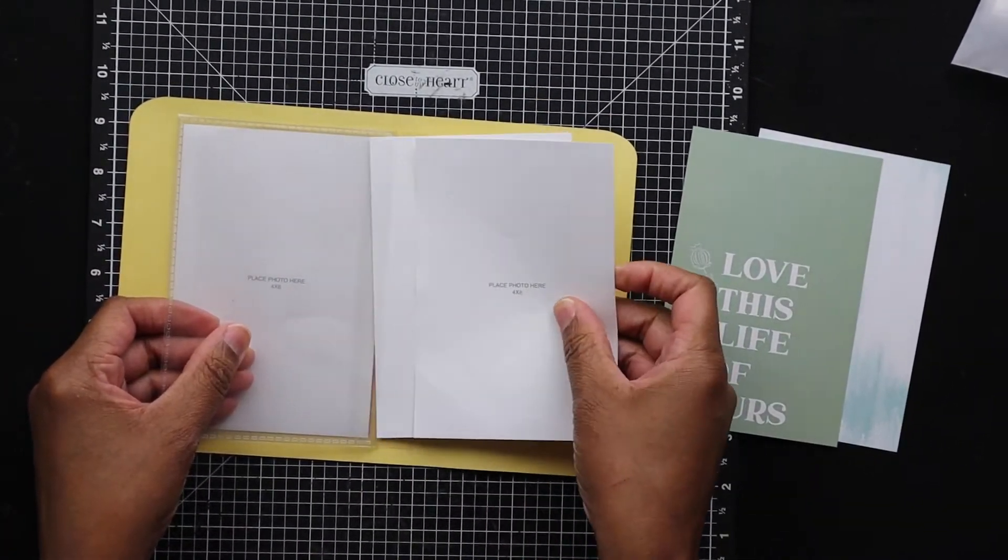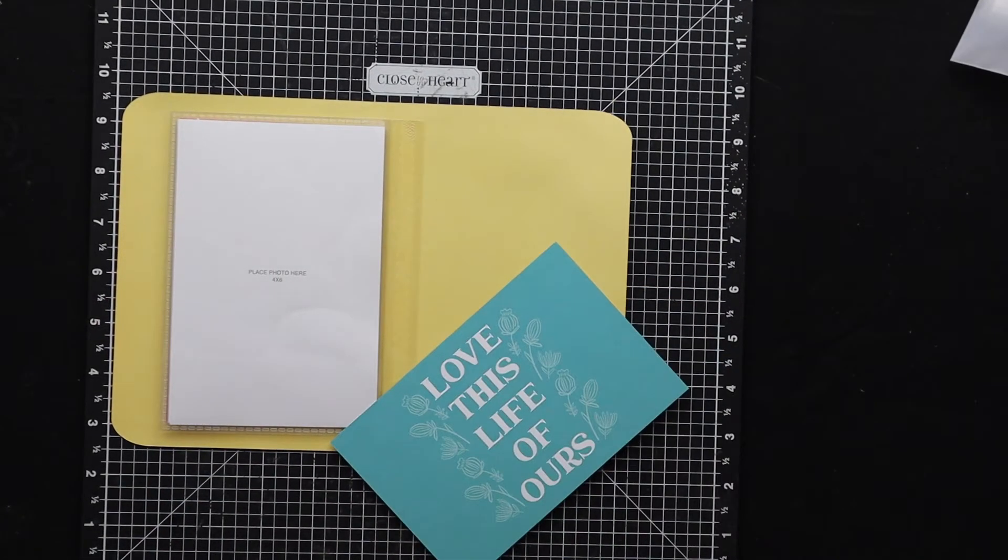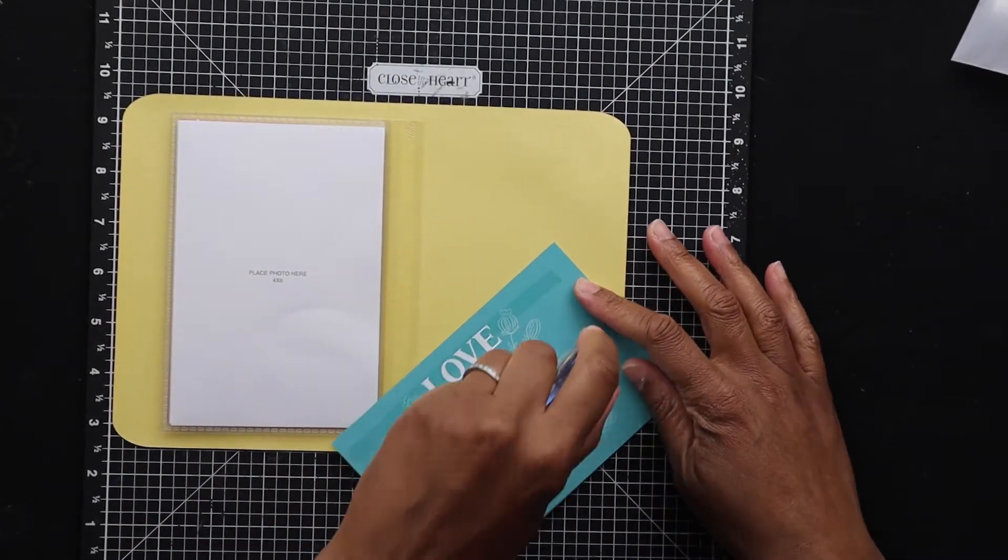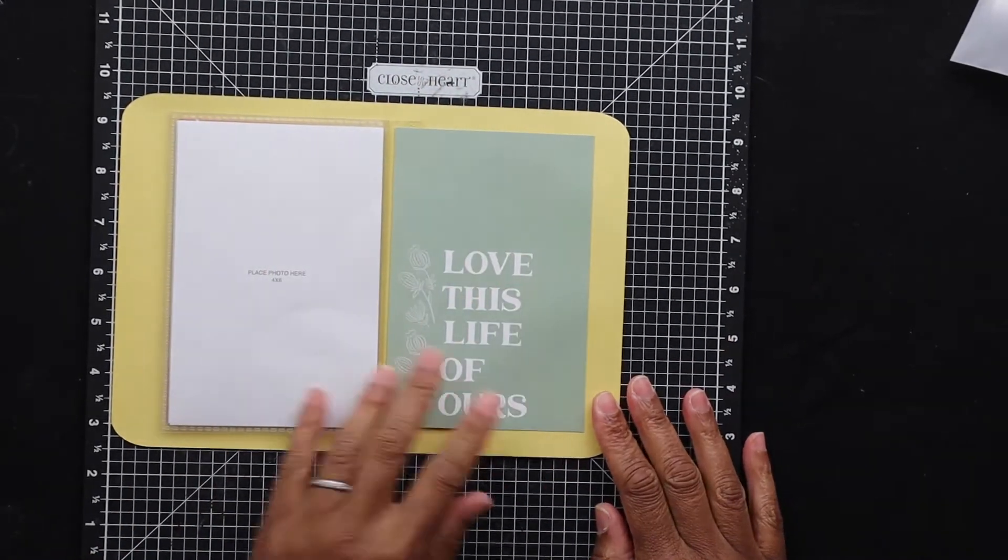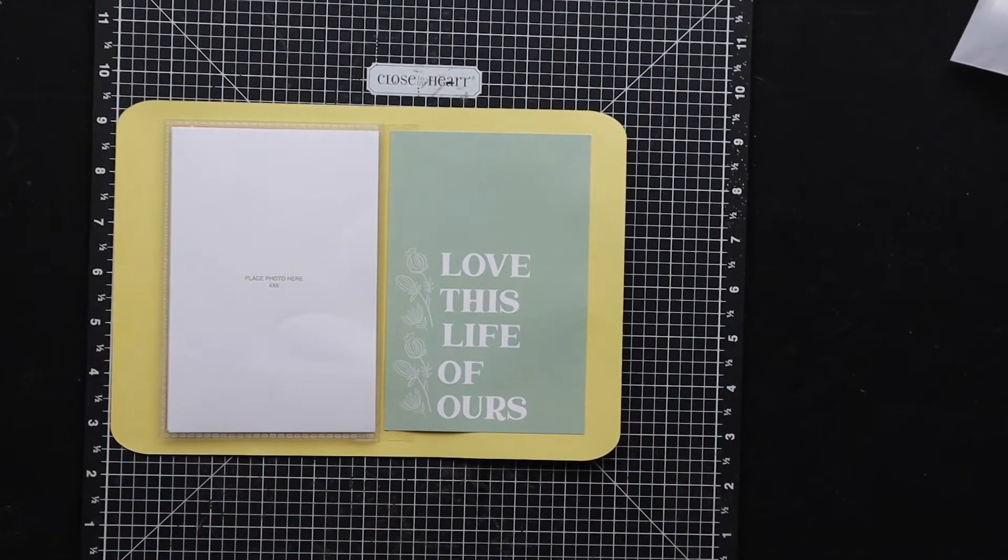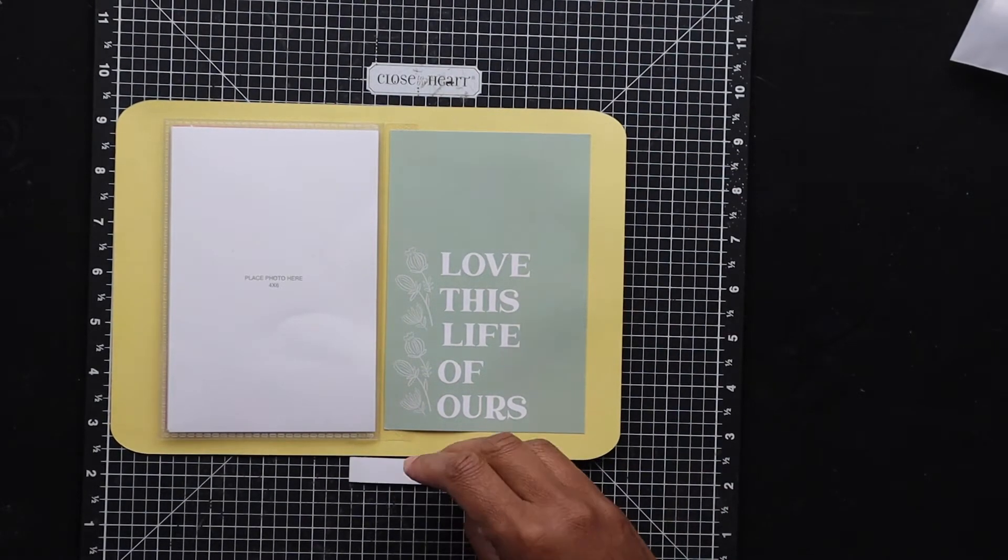To cover up the seam from the flip flaps, I'm going to use a Picture My Life card to cover that up. And then I'm just going to decorate this back panel Picture My Life card to finish up this pocket.